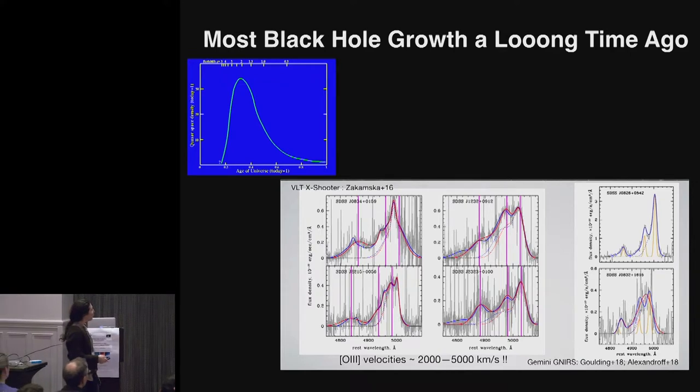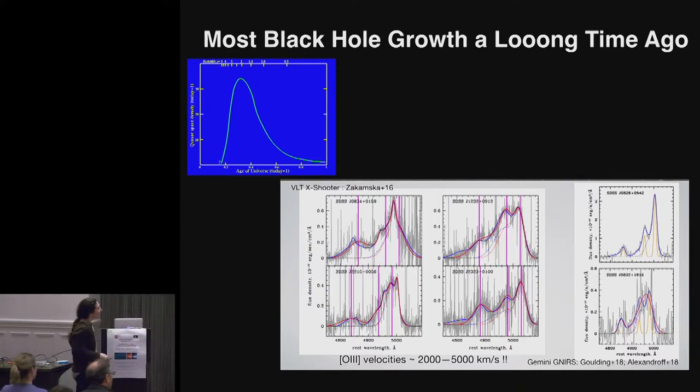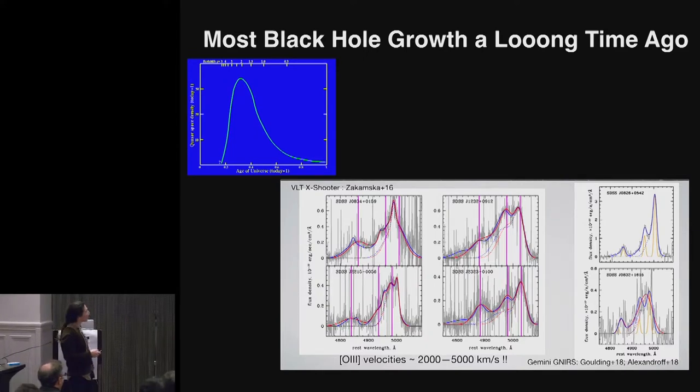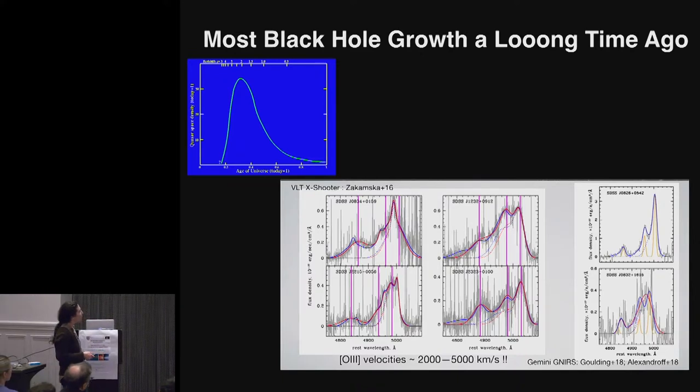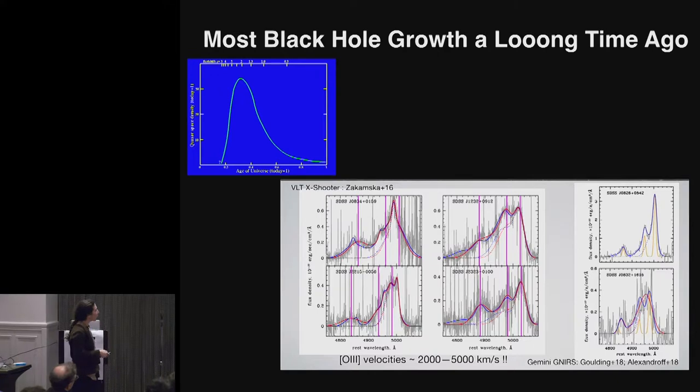These are new observations, again, led by Nadia Zakomska and my postdoc Andy Goulding. These are relatively rare, accreting, very luminous, accreting supermassive black holes, about as luminous as we get, so probably powered by billion solar mass black holes.